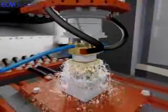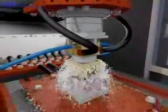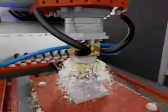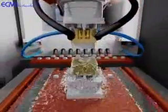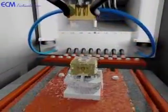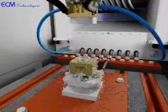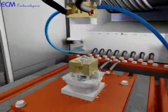We call the tool that is used to machine a product via ECM an electrode or cathode. This electrode has the inverse form of the desired end product and does not wear during the process. The material used for the electrode does not have to be harder than the workpiece either because it makes no contact with the workpiece, electrically or mechanically.